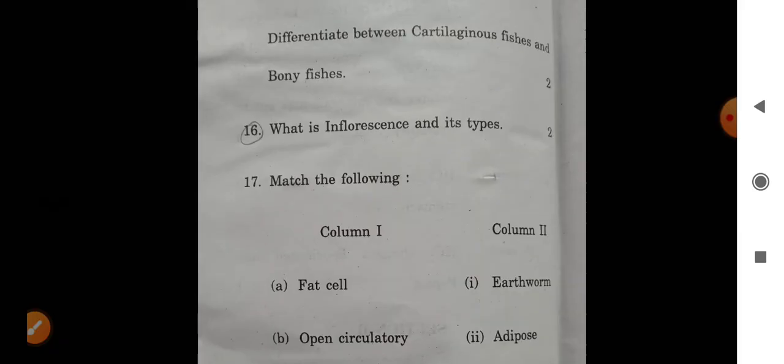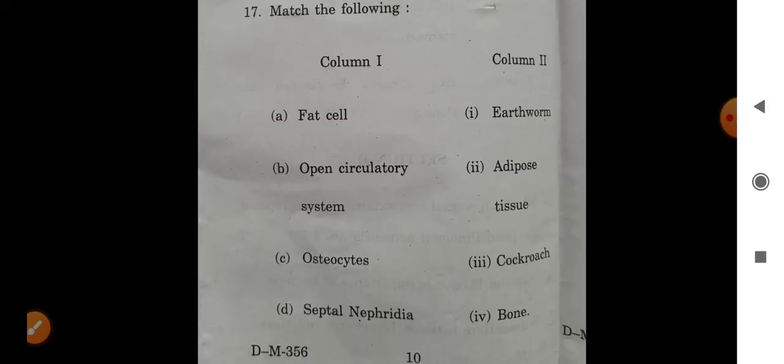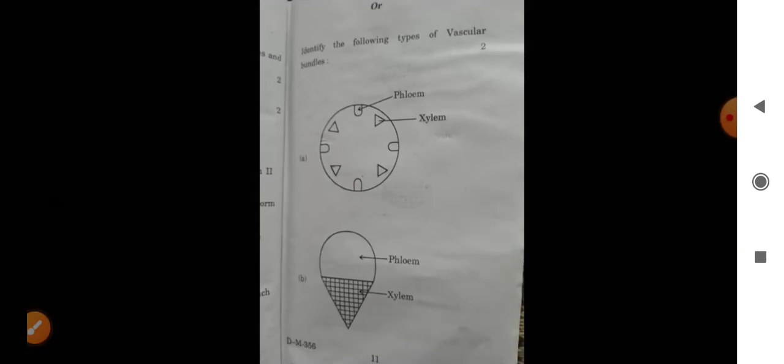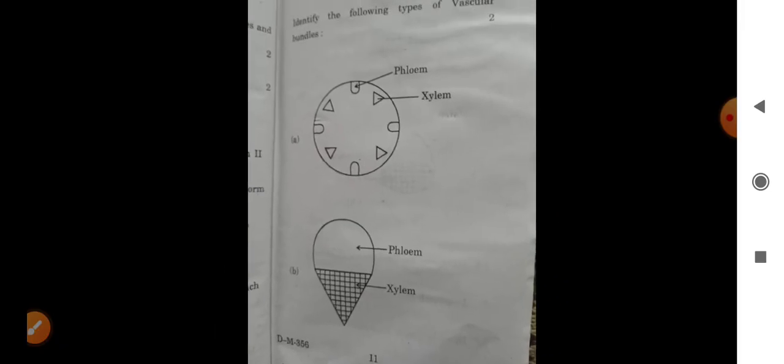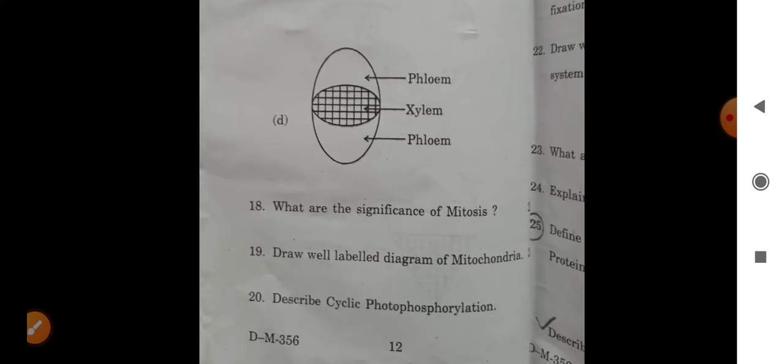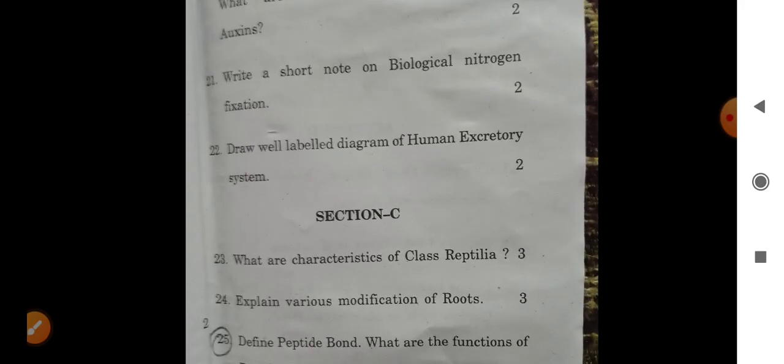The difference between cartilaginous fish and bony fish. What is the influence of the following fat cells? We have to do a match-up where we have vascular bundles to identify. In question 18, we have to do significance of mitosis with diagram. Mitochondria, cyclic photophosphorylation, what is the physiological effect of auxin. Write a short note on biological nitrogen fixation. Draw well-labeled diagram of human excretory system.